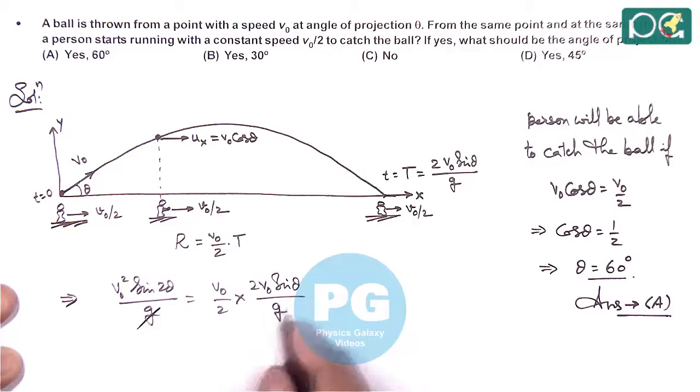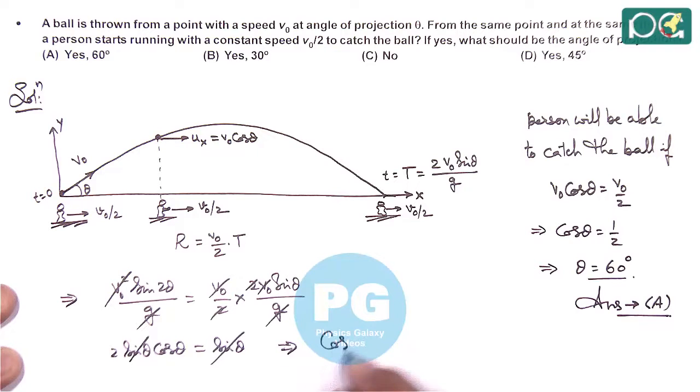Here g gets cancelled out, V-naught square gets cancelled out. Sin 2 theta we can expand as 2 sin theta cos theta. The 2 also gets cancelled out, equals sin theta, which can also be cancelled out. This gives us the same value cos theta equals 1 by 2, or directly theta is 60 degrees.